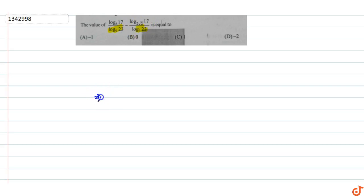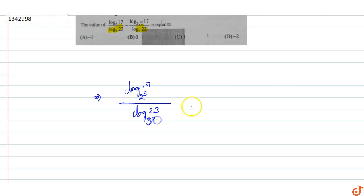In this question, the value of log 17 base 8 upon log 23 base 9, minus log 17 base 2 root 2 upon log 23 base 9, is to be found. We simplify by carrying together log 17 base 8, converting: 8 is 2 cubed, and 9 is 3 squared.